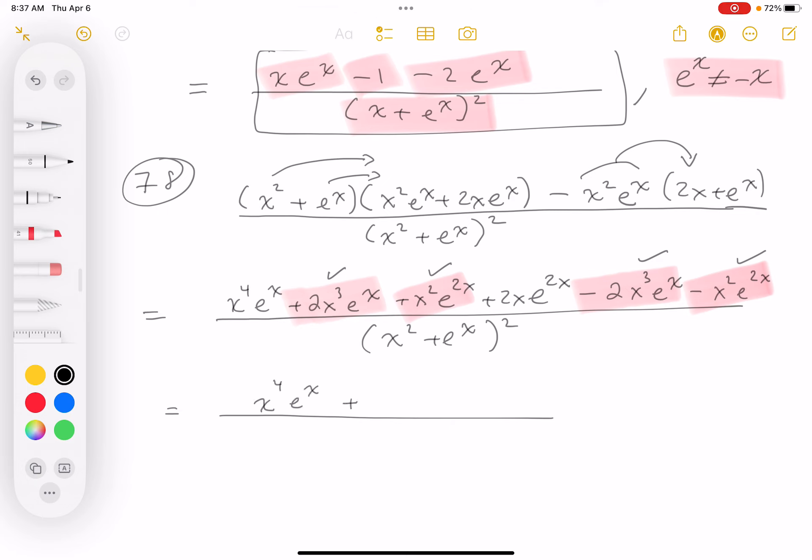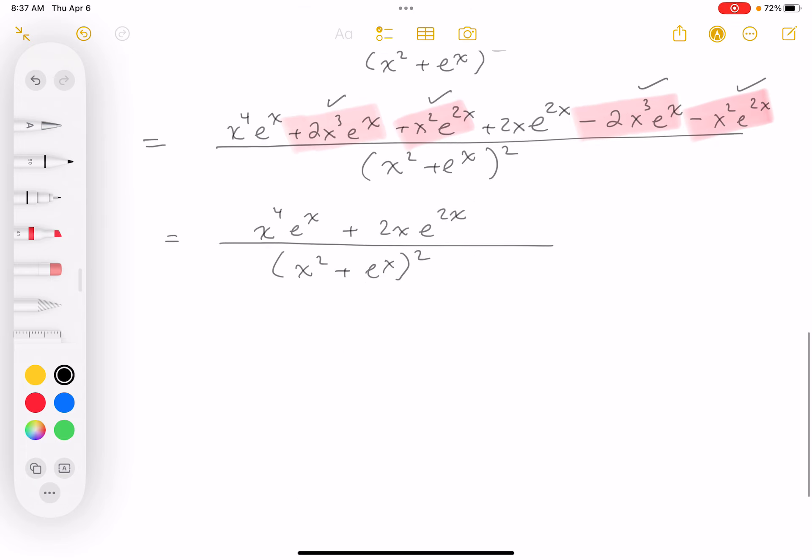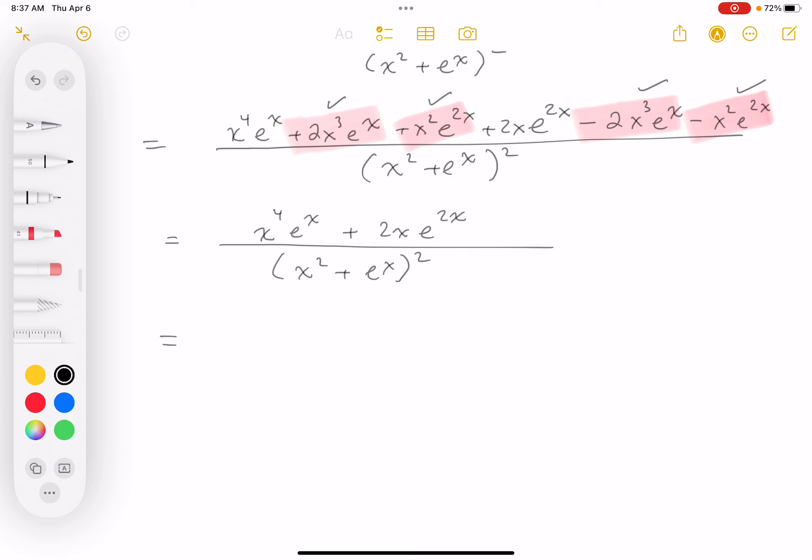And I'm left with 2x e to the 2x. We're left with the bottom x squared plus e to the x squared.